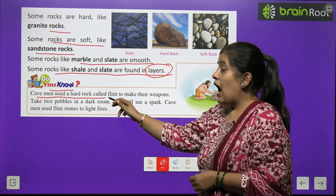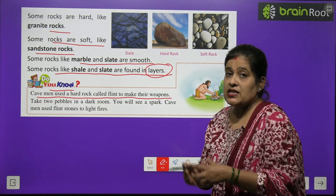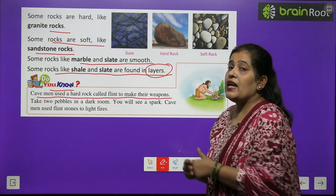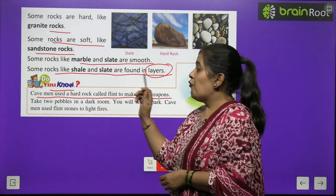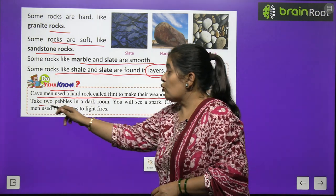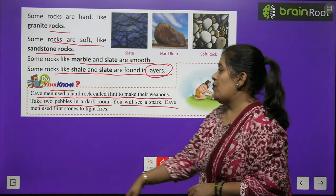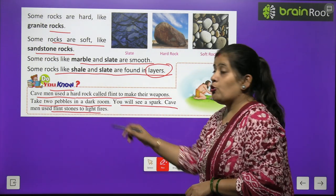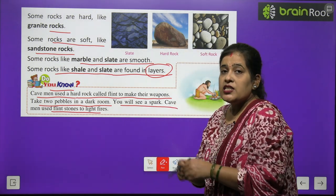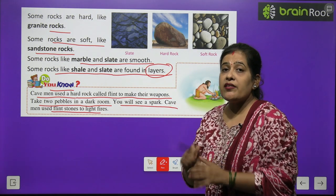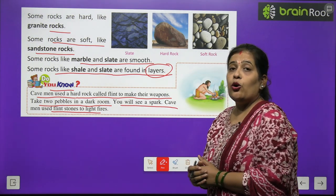Cavemen used a hard rock called flint to make their weapons. Cavemen also used flint stones to light fire. If you take two pebbles into a dark room and strike them together, you will see a spark.